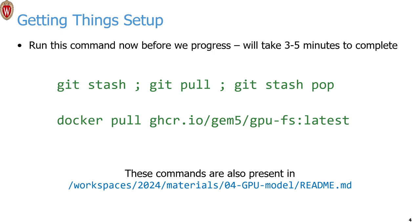In terms of getting set up, the GPU support behaves a little differently than what you've seen thus far. A couple of you pointed out during lunch break there was a problem with a couple of the paths that didn't quite work, so please go ahead and run git stash, then git pull, and then git stash pop — that should pull into your code space the fixes to those two problems. When that's done, please run the docker pull command for the GPU models.